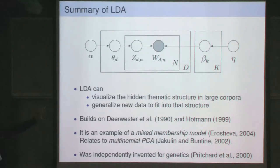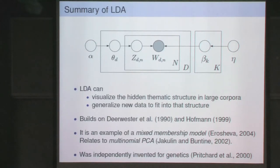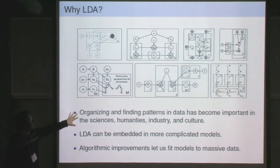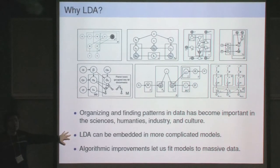LDA can visualize the hidden thematic structure of large corpora and generalize new data into that structure. This builds on latent semantic indexing and probabilistic latent semantic indexing—it's essentially a Bayesian version of PLSI. In statistics, models like this are called mixed membership models, where each data point exhibits multiple components with different proportions, as opposed to a single component in a mixture model. LDA has been used and adapted in many different settings because organizing and finding patterns in data has become extremely important, and models like LDA can easily be embedded in more complicated models.